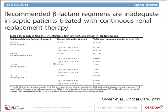With standard dosing regimens, meropenem achieved target attainment 81% of the time. For piperacillin-tazobactam, target attainment in the first 48 hours was only 71%. Zero percent of patients receiving cefepime achieved target attainment, and only 53% of those receiving ceftazidime. This illustrates the problem of adequately dosing antibiotics in this vulnerable population with poor outcomes.